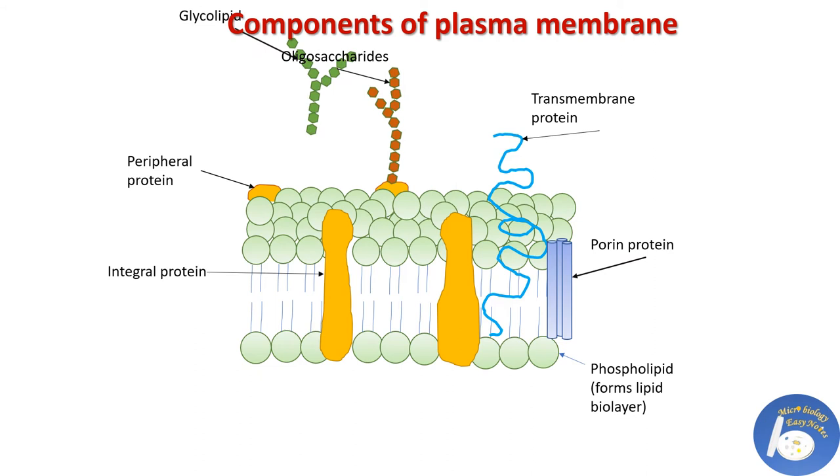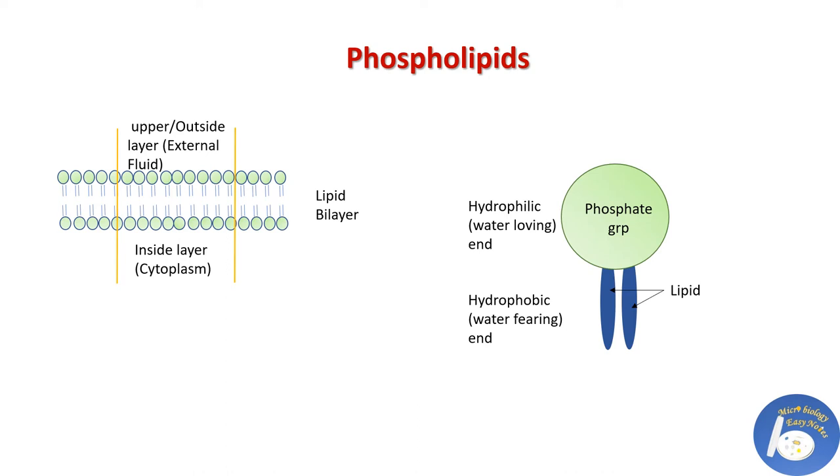Let's go into detail one by one. First, phospholipids. Phospholipids in plasma membrane are present in bilayer form, meaning two layers of phospholipids are present. Upper layer or outside layer which is in contact of external fluid, the fluid present between cell wall and plasma membrane.